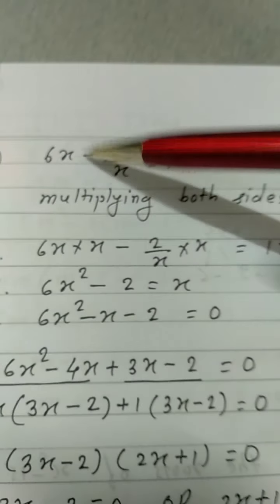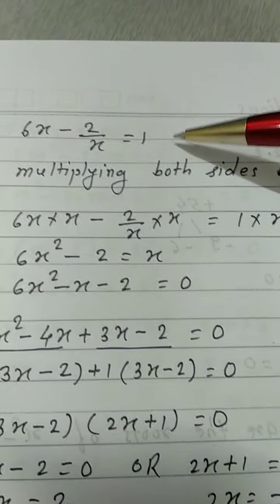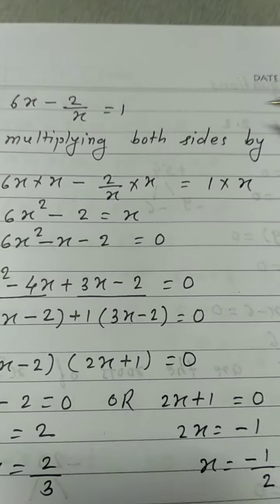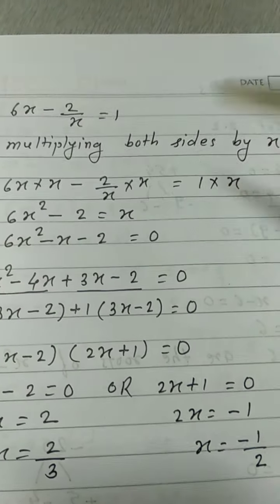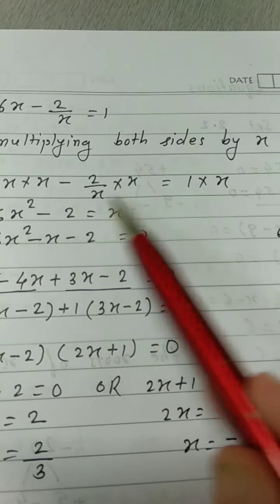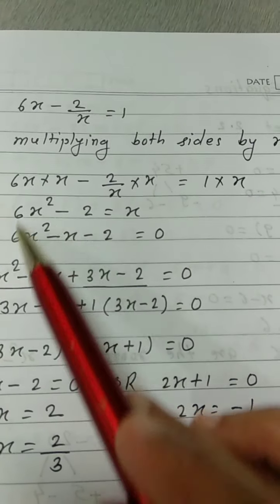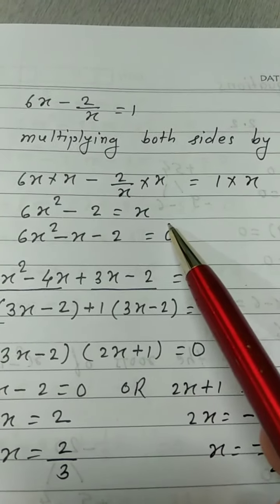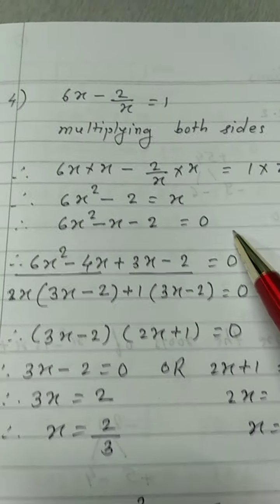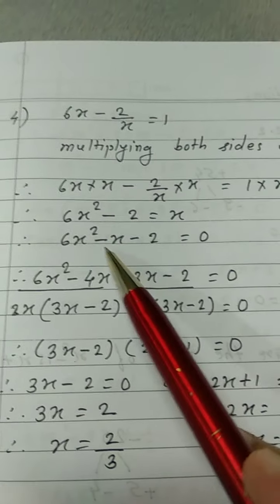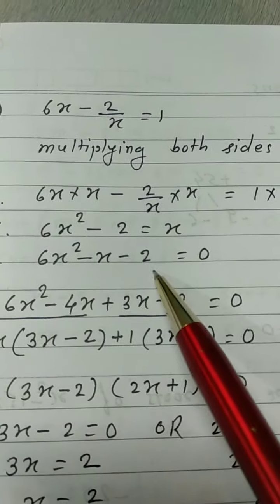Next example: 6x − 2/x = 1. First we have to convert it into standard form, so we multiply both sides by x. It becomes 6x² − 2 = x, which gives 6x² − x − 2 = 0. Now we have to take the product of 6 and 2, so the product is 12. The middle term should be −1.